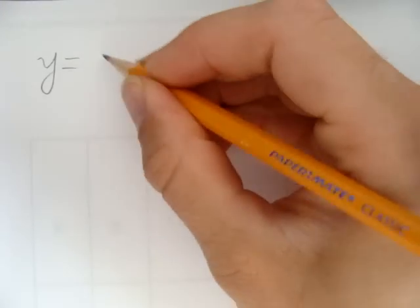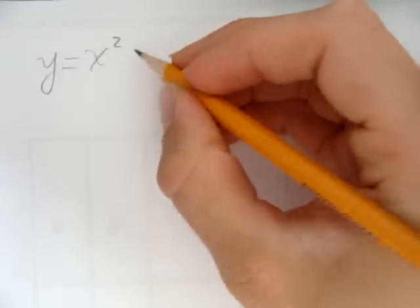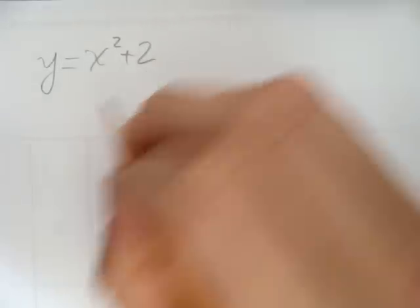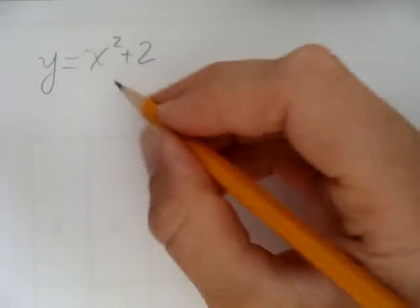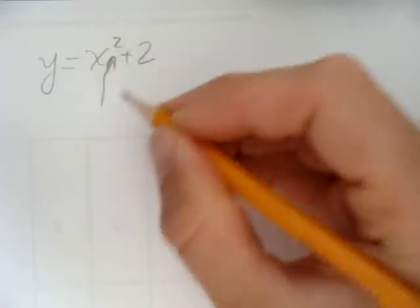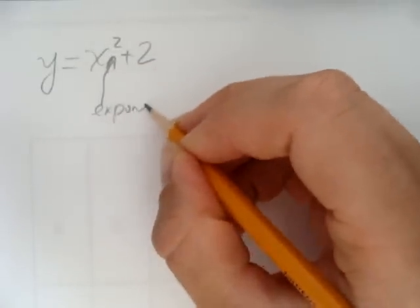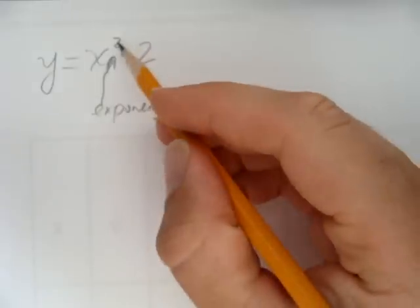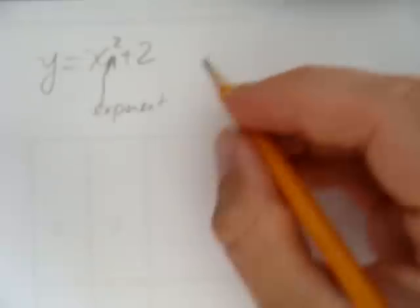This time I'm going to look at the equation y equals x squared plus 2. I know this is quadratic because of the exponent. It tells me for sure when you have a power of 2 on an x, you've got a quadratic.